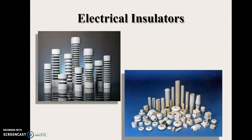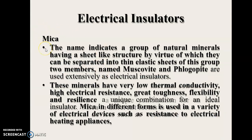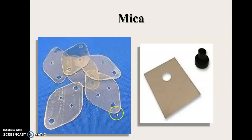These are some examples for electrical insulation. One such is mica. The name indicates a group of natural minerals having a sheet-like structure, by virtue of which they can be separated into thin elastic sheets. Two members named muscovite and phlogopite are used extensively as electrical insulators.